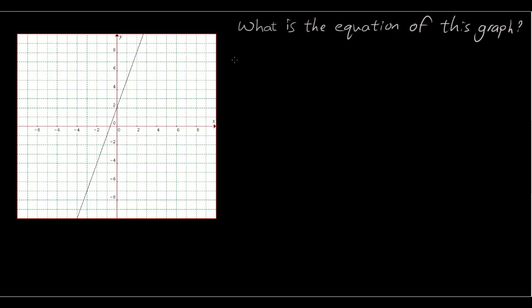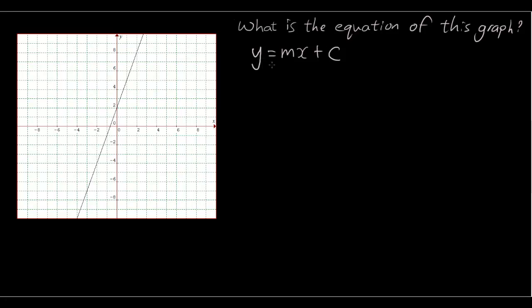So now we're going to try and work backwards. If I give you a straight line graph, how do you then go backwards and find out what the equation is? We know that the equation is y equals mx plus c — all straight lines will have this general equation. Now m, which is the gradient — how do you find the gradient of a straight line? You use the formula: gradient equals rise over run. Gradient is the slope of the line, how steep the line is. So firstly, you pick any two points on this line.